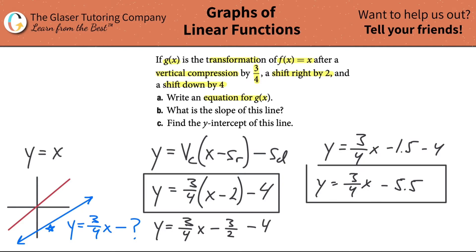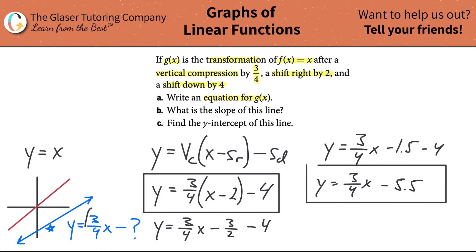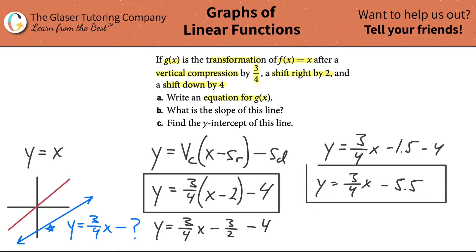Now take a look — does this equation make sense based on the new blue line? We said the slope originally for the red line was 1, and the slope now has to be 3 quarters of 1 because it was compressed by 3 quarters. And we realized the y-intercept should be some negative value — and did it work out to be negative? Yes. It is accurate, and in terms of the picture it looks like it makes sense. So this is indeed the new equation.